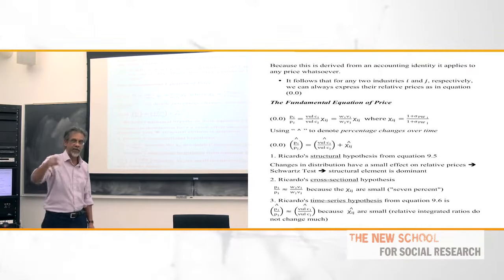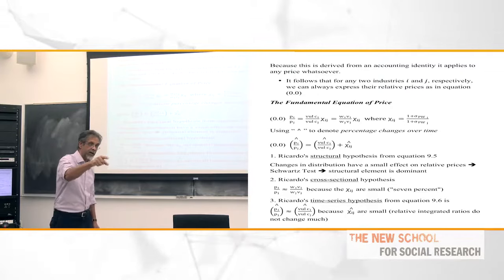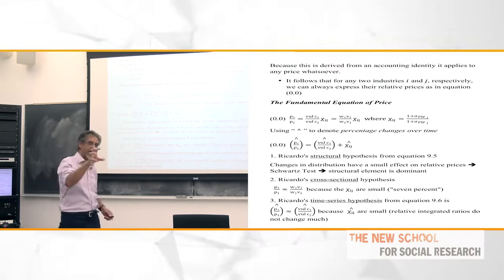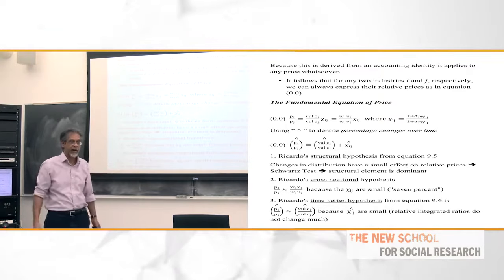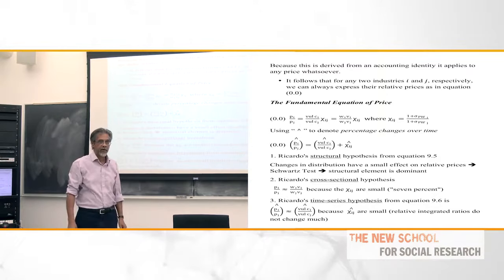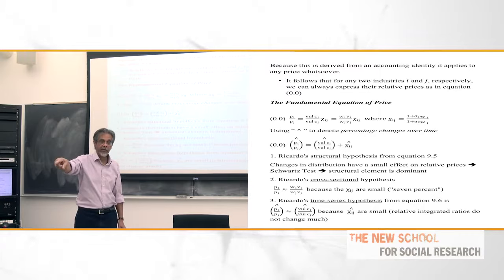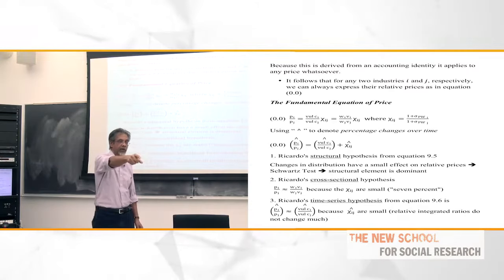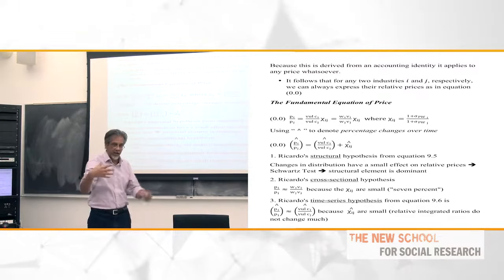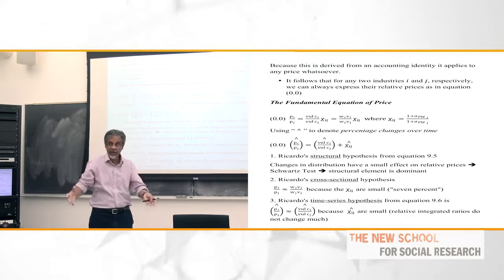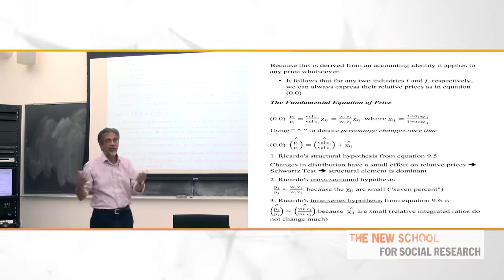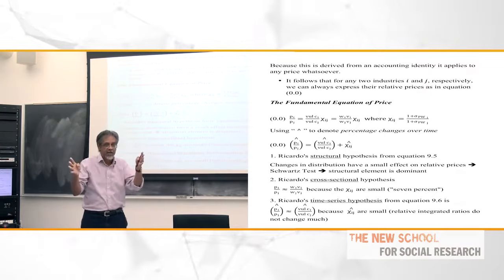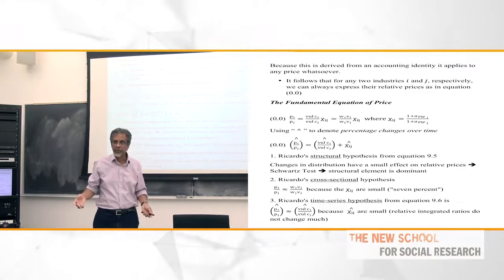Suppose I take an industry with a profit-wage ratio of 0.6. If I do the vertical integration and compare it to another industry's vertical integration, they'll get closer together, because each vertically integrated profit-wage ratio is a convex combination of the profit-wage ratios of all the industries that enter into a given industry. In a basic system where all sectors are connected, the vertically integrated profit-wage ratio will be a weighted average of everybody's ratios. So vertically integrated profit ratios will be basically weighted averages of the same set of numbers with different weights — convex combinations — meaning their dispersion will be much less than the direct ratios.